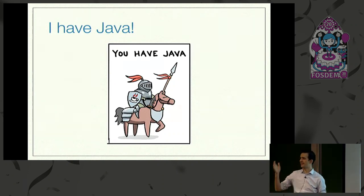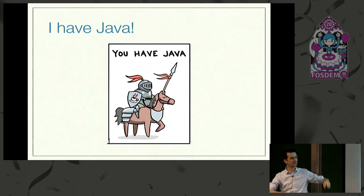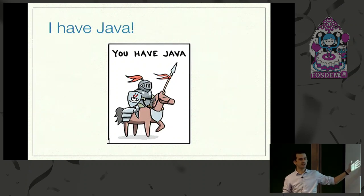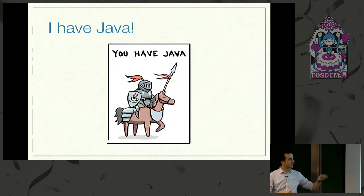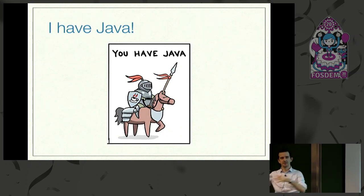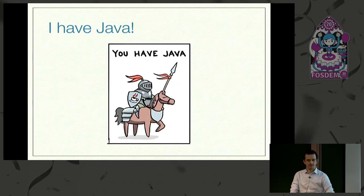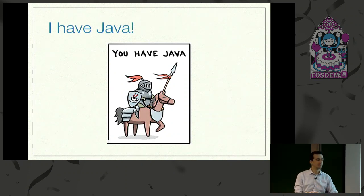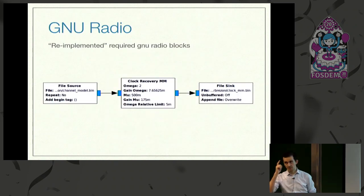I don't want to install Conan framework for package management and build different options. It's a single language for the whole stack. If you've tried to get satellite data, you might know you need to compile a lot of dependencies for GNU radio, some for GeoSatellites, and hope for the best. With Java, it's a single language. I had to rewrite a piece of GNU radio, and I did it the smart way.